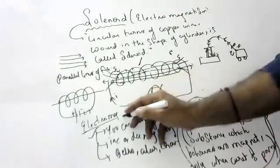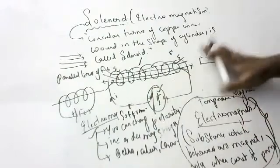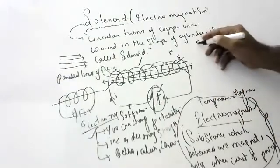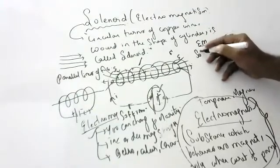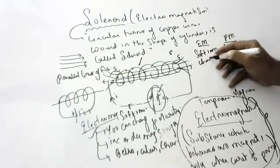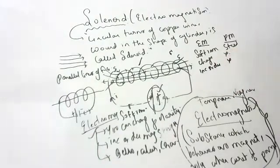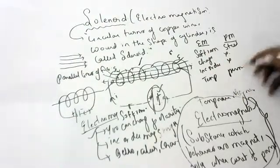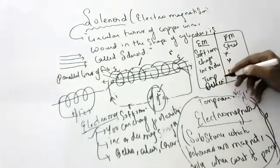Electromagnets are made of soft iron; permanent magnets are made of steel. In electromagnets you can change polarity; in permanent magnets you cannot. You can increase or decrease the strength of an electromagnet; you cannot with a permanent magnet. Electromagnets are temporary; permanent magnets are permanent. Electromagnets are used in bells and cranes; permanent magnets are used for laboratory or study purposes.